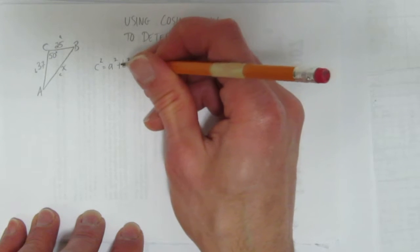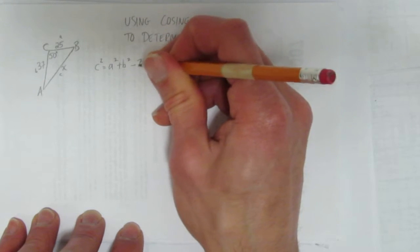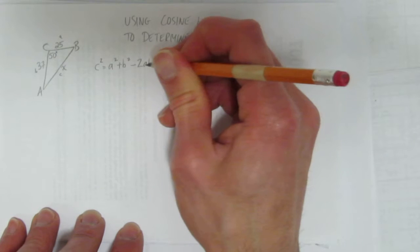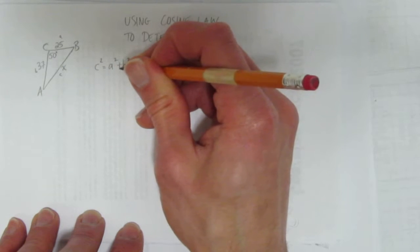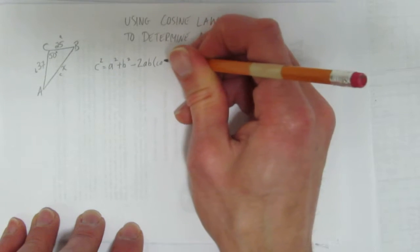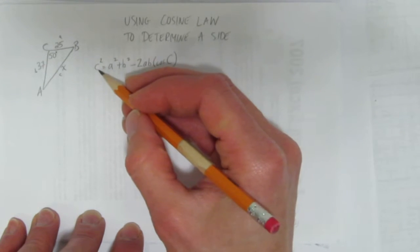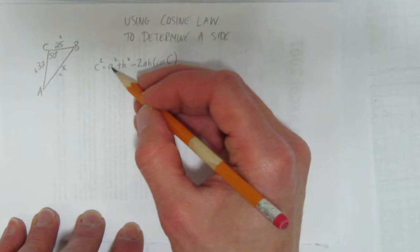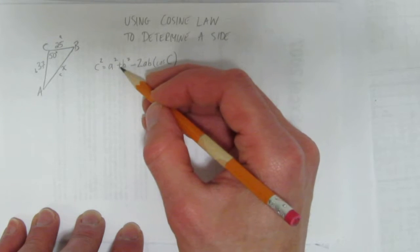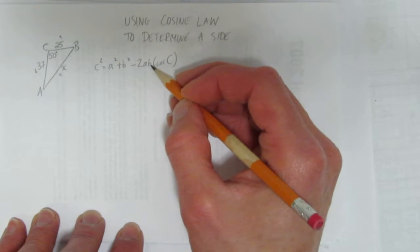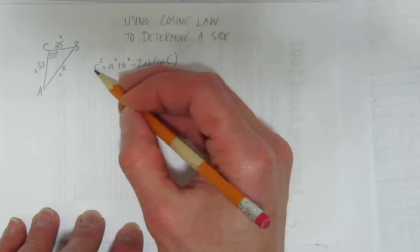So we've got c² = a² + b² - 2ab times the cosine of the big letter C. Let me say that again. c² equals the other two sides squared added together minus two times them times the cosine of the big letter of the side.